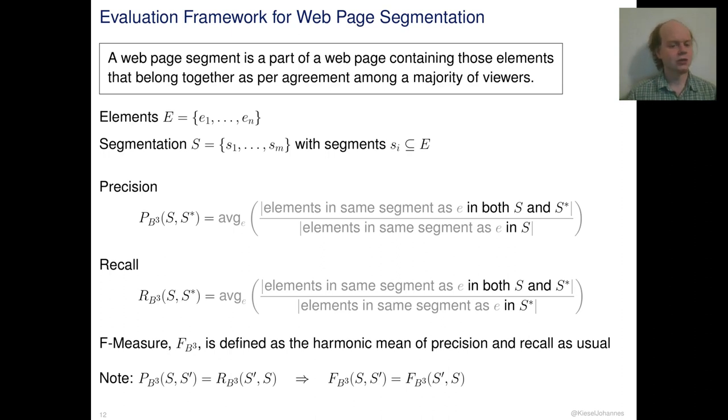But if we take a closer look at precision, we can see that as long as each segment of S is a sub-segment of a segment of S-star, precision has the maximum value of 1. Precision is thus not affected if S is a more fine-grained version of S-star. In the same way recall is not affected if S is a more coarse-grained version of S-star. So taking both allows to immediately identify segmentations that are just made at different levels of detail but otherwise agree.